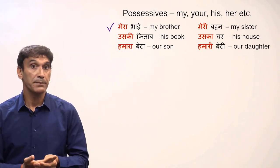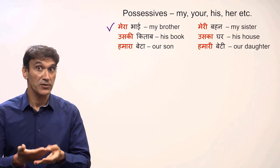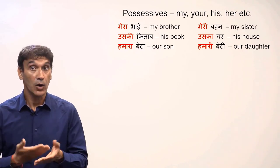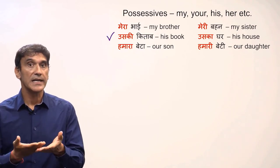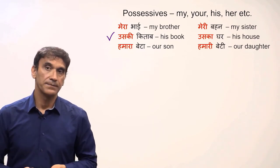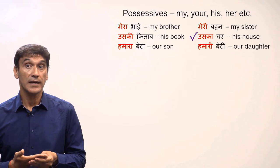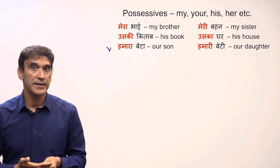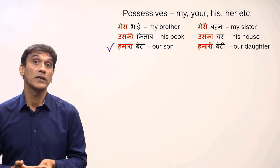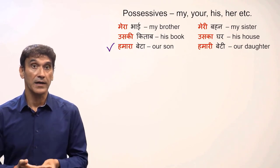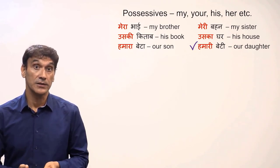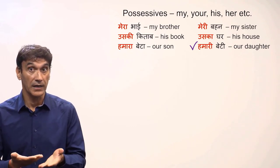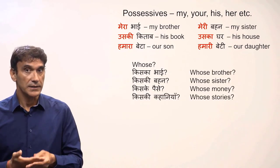Let's take some examples of possessives with nouns. Mera bhai — my brother. Bhai is masculine, so the possessive pronoun is masculine: mera. Meri behen — my sister. Behen is feminine, so it is meri. Uski kitab — his book. Kitab is feminine, so it takes the feminine form uski. Uska ghar — his house. Ghar is masculine, so the form is uska. Hamara beta — our son. Beta is masculine, so the possessive is also masculine: hamara. Hamari beti — our daughter. Beti is feminine, so the possessive is also feminine: hamari.